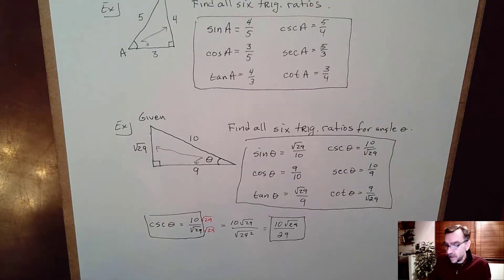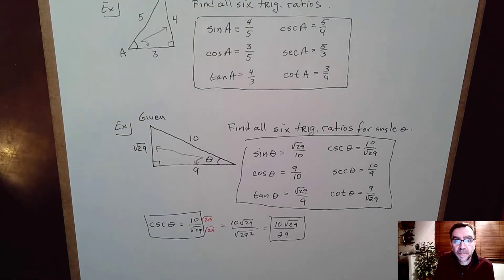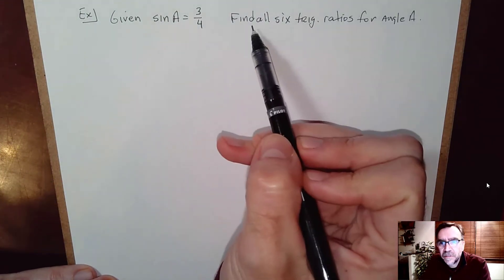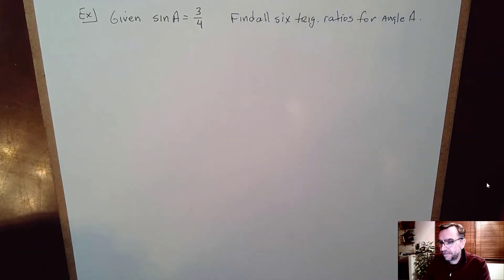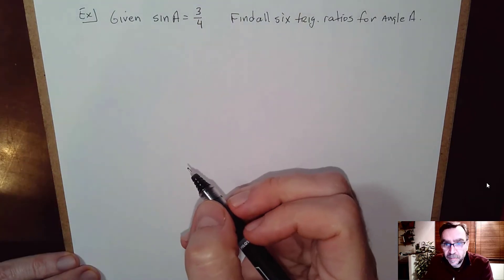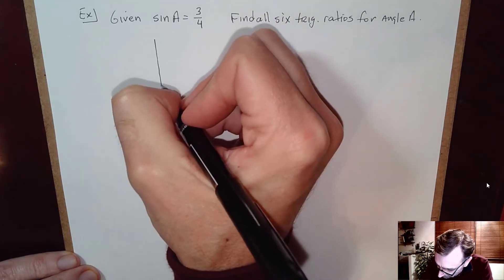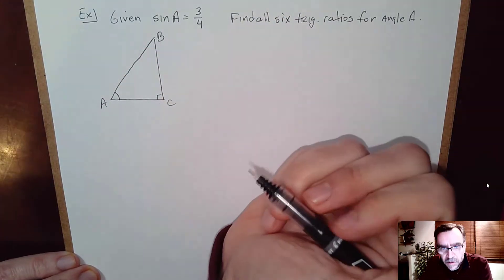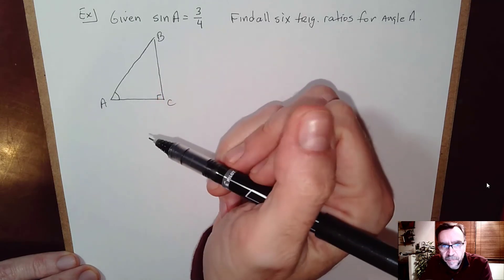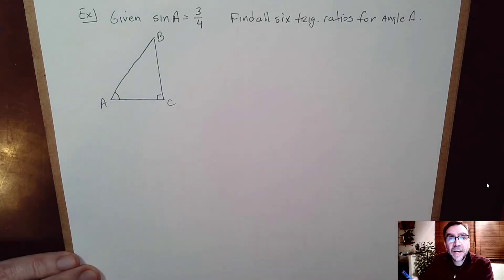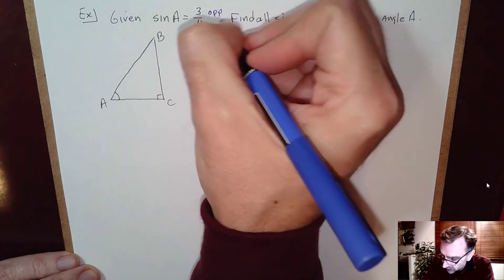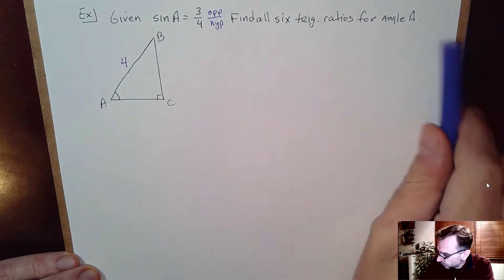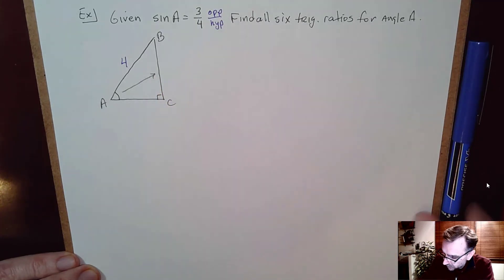Let's do one more because they don't always give you all the sides of a right triangle. Here, instead of a picture, they just say sine of A equals 3/4 and want all six trig ratios for angle A. Let's draw our standard right triangle ABC. Sine of A is opposite over hypotenuse, so the given information tells us the hypotenuse is 4 and the side opposite of angle A is 3.